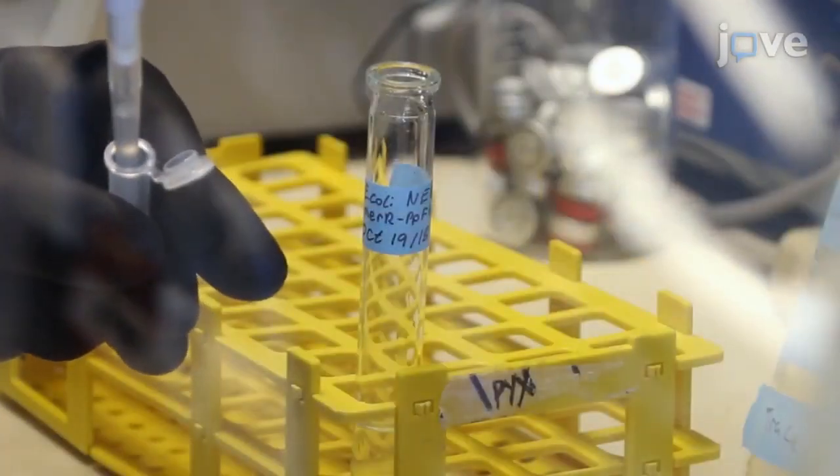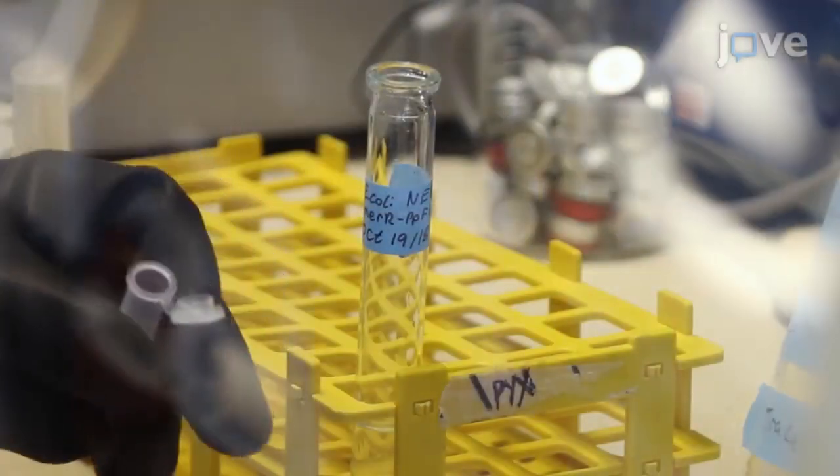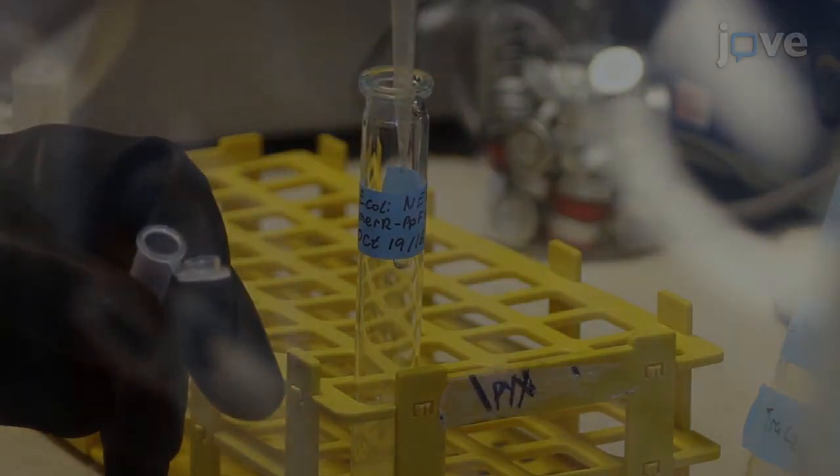Then add the resuspended culture to the bulge tube containing 8 milliliters of fresh growth medium and ampicillin.